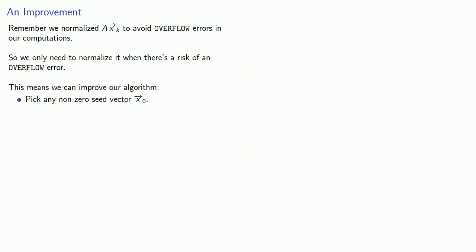This means we can improve our algorithm. Let's again pick any nonzero seed vector x0. This time let ym+k be A to the power of k applied to xm, and normalize. This allows us to skip the computation of most of the xk's.